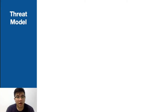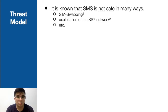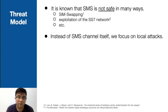After finishing our prerequisites, I want to first discuss our threat model. It is known that SMS is not safe in many ways — for example, SIM swapping, exploitation of the SS7 network, etc. So there are so many attacks an attacker can do to break SMS. However, instead of focusing on the SMS channel itself, we focus on another threat model, which is called local attacks.